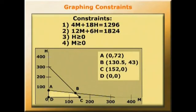Point A has the coordinates 0 and 72. Point B has coordinates of 130.5 and 43. Point C has coordinates of 152 and 0. And point D has coordinates of 0 and 0.